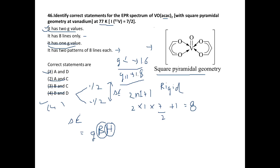Because of the different energy requirements for g parallel and g perpendicular transitions, we are going to get two patterns of eight lines each. The number of lines remains 8, but since g parallel = 1.8 and g perpendicular = 1.6 give different ΔE values, we get two distinct patterns. Therefore the correct option is option 1 — that is, A and D.